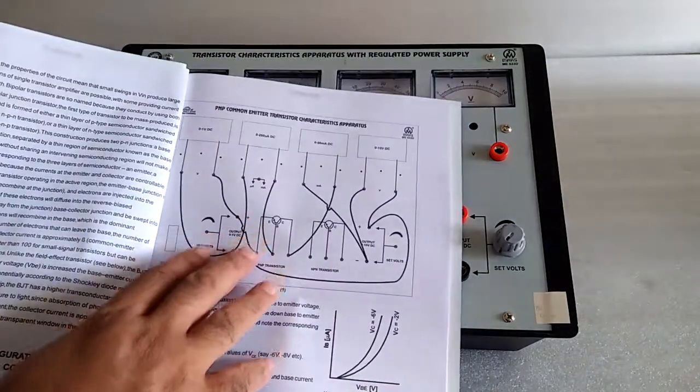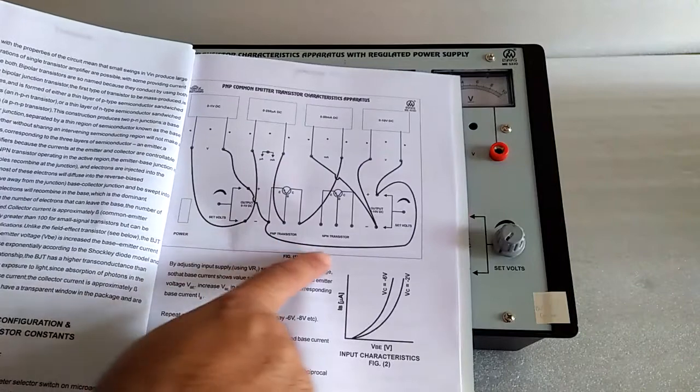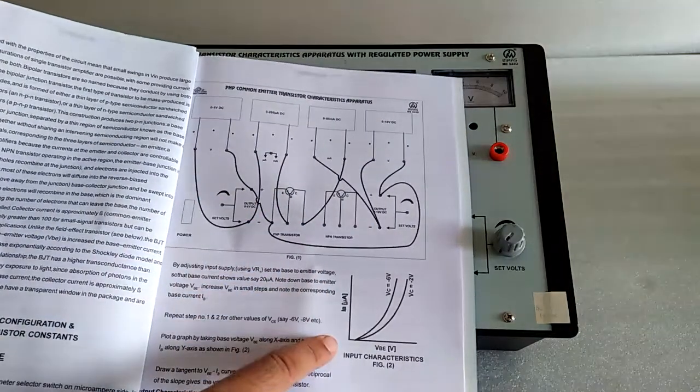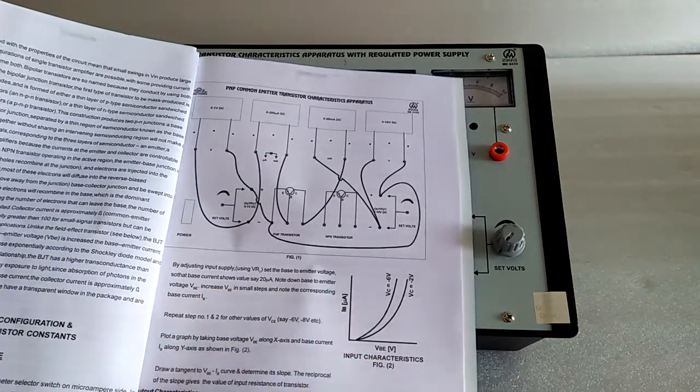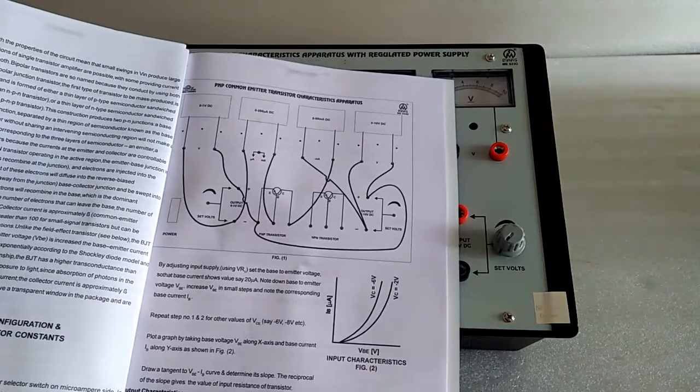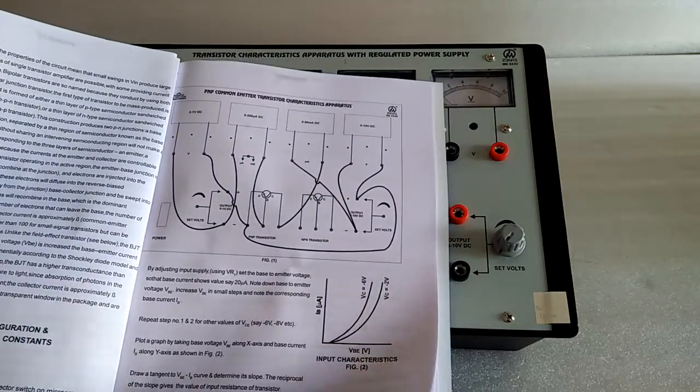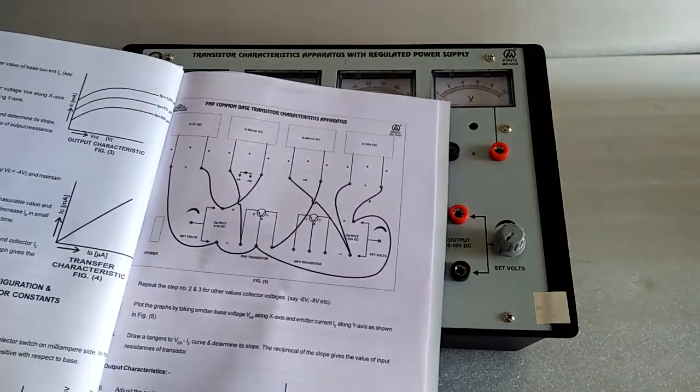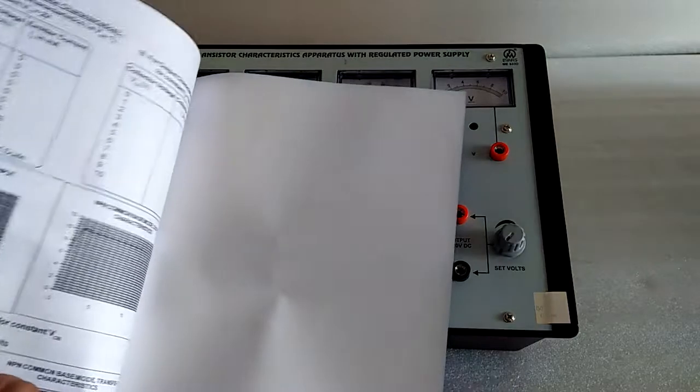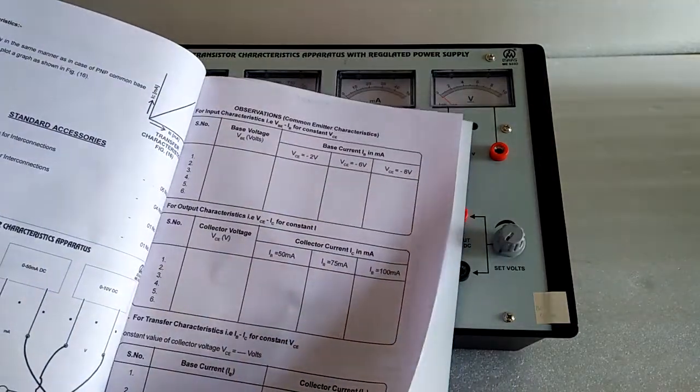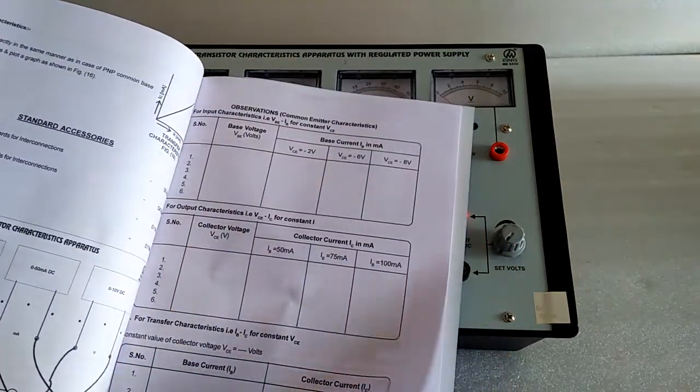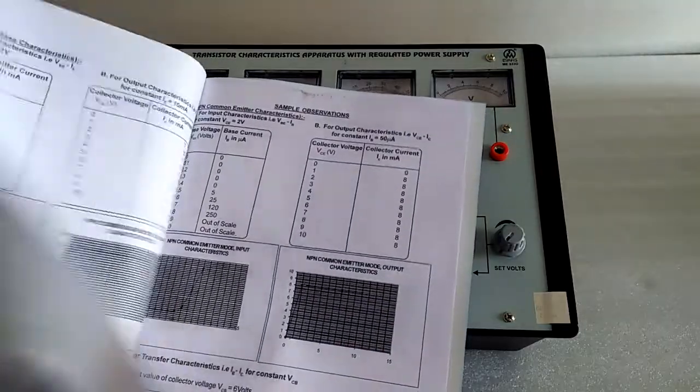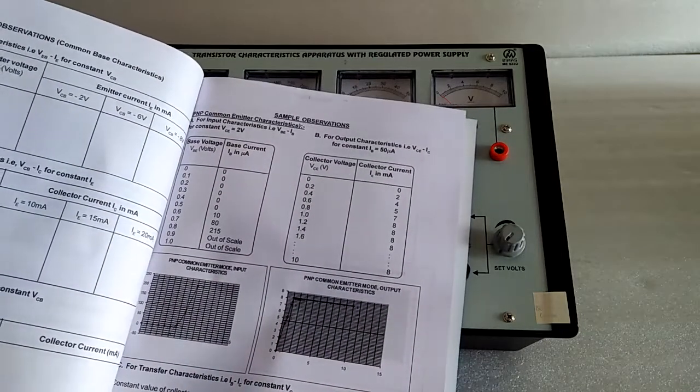Here we have the manual. All the connection diagrams are drawn over here. Here is the graph VB versus IB at constant VC, common base. All our graphs are given. Here is the observation table with sample observations and readings. These may vary from piece to piece.